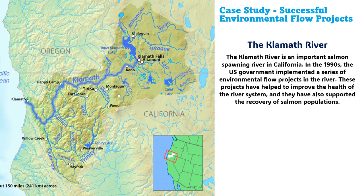The second important case study is the Klamath River in California. In the 1990s, the U.S. government implemented a series of environmental flow projects in the river. These projects helped to improve the health of the river system and supported the recovery of salmon fish populations. This river flows from its source and discharges into the ocean.